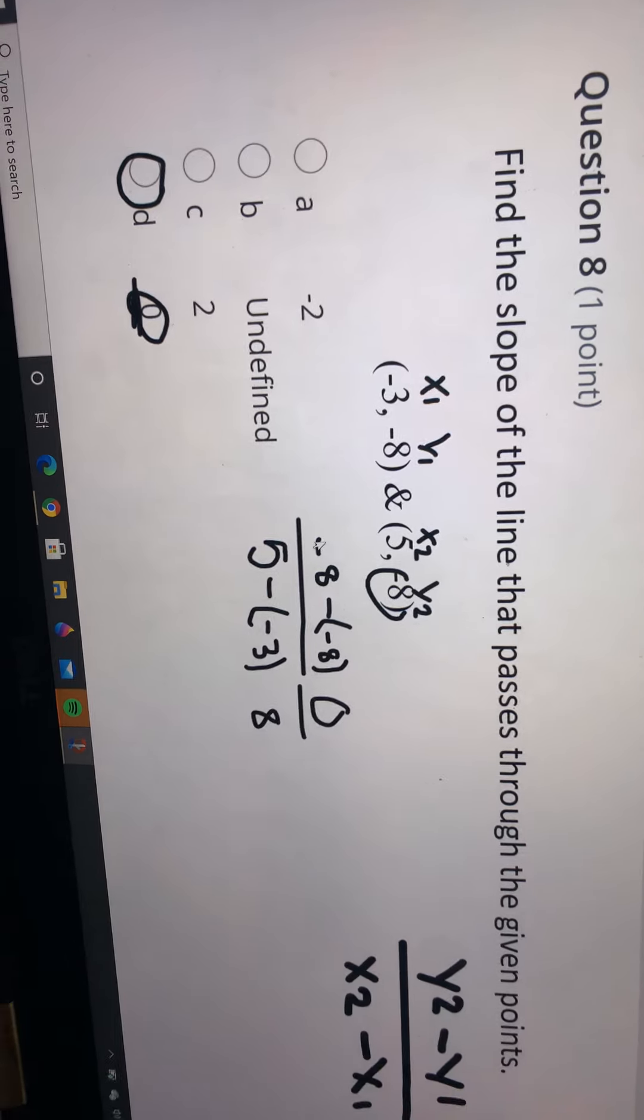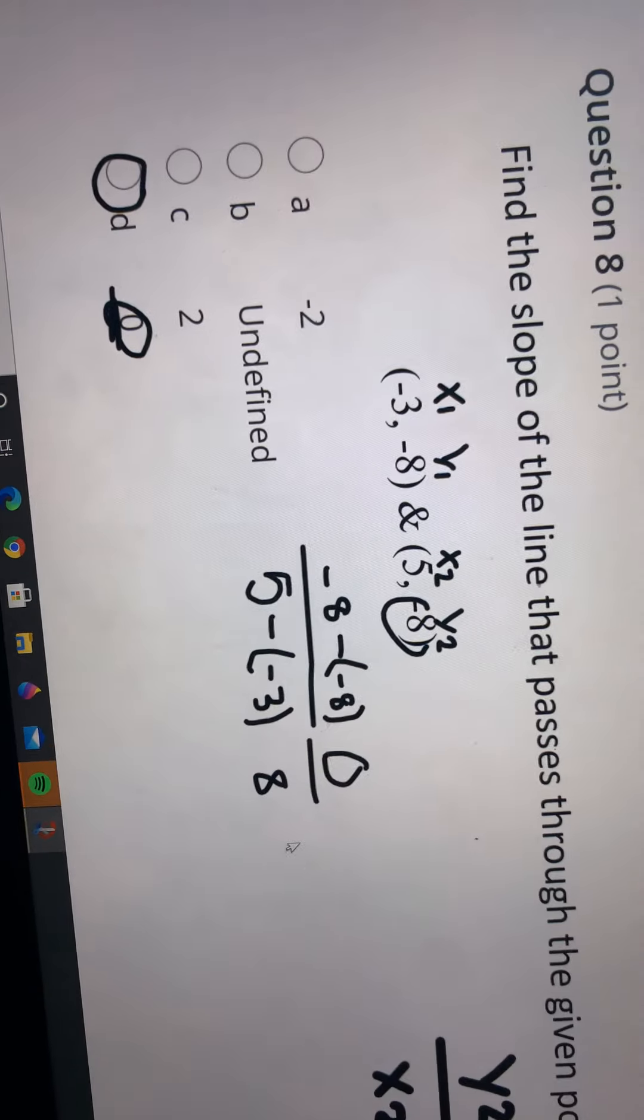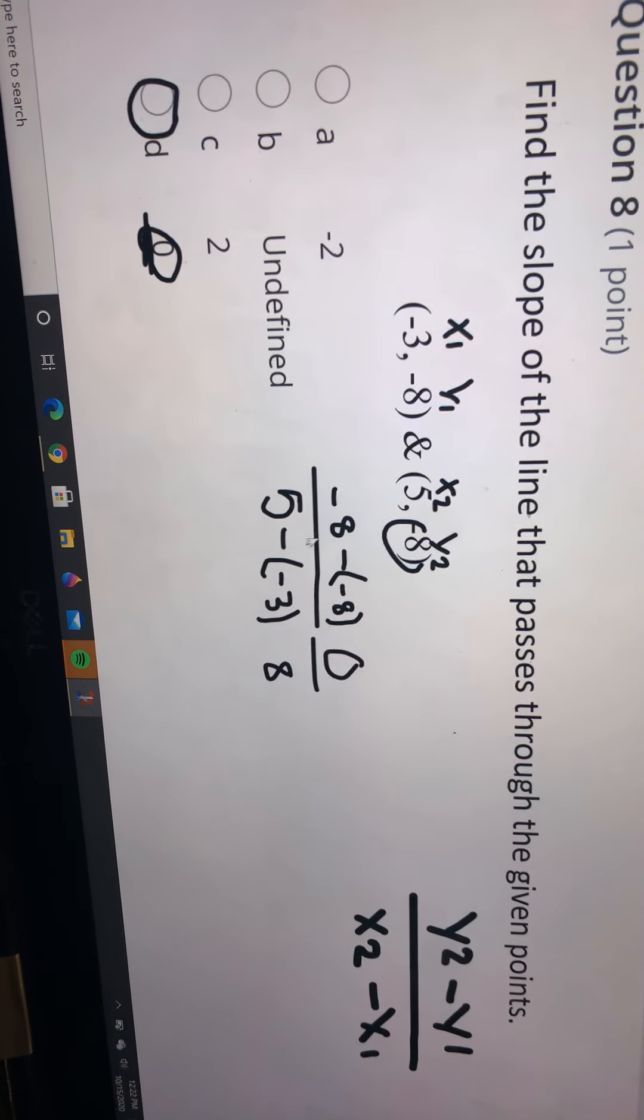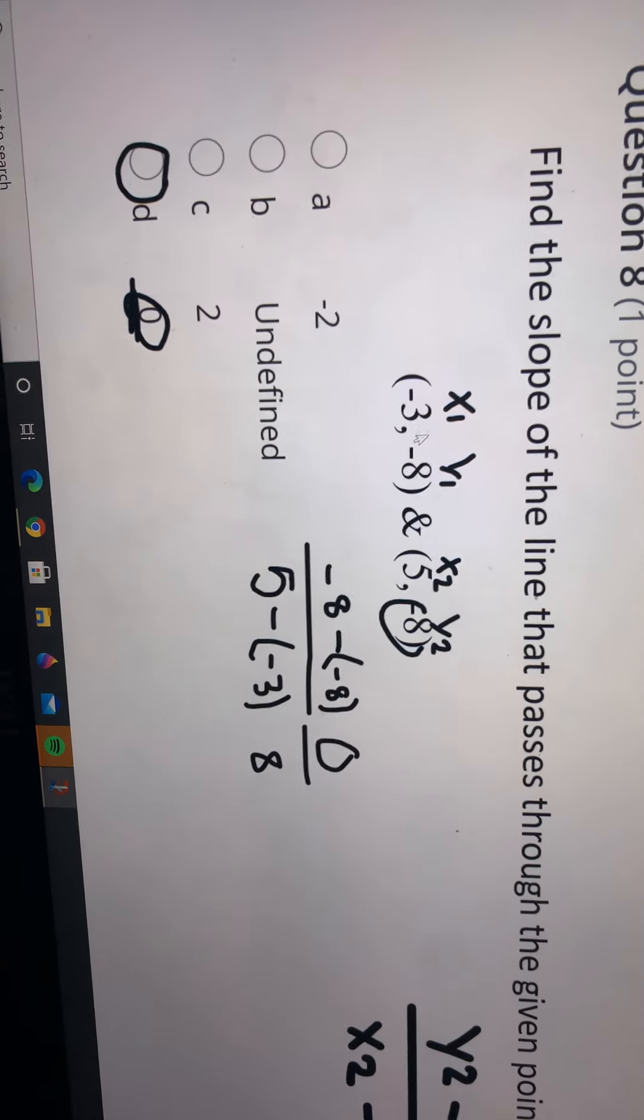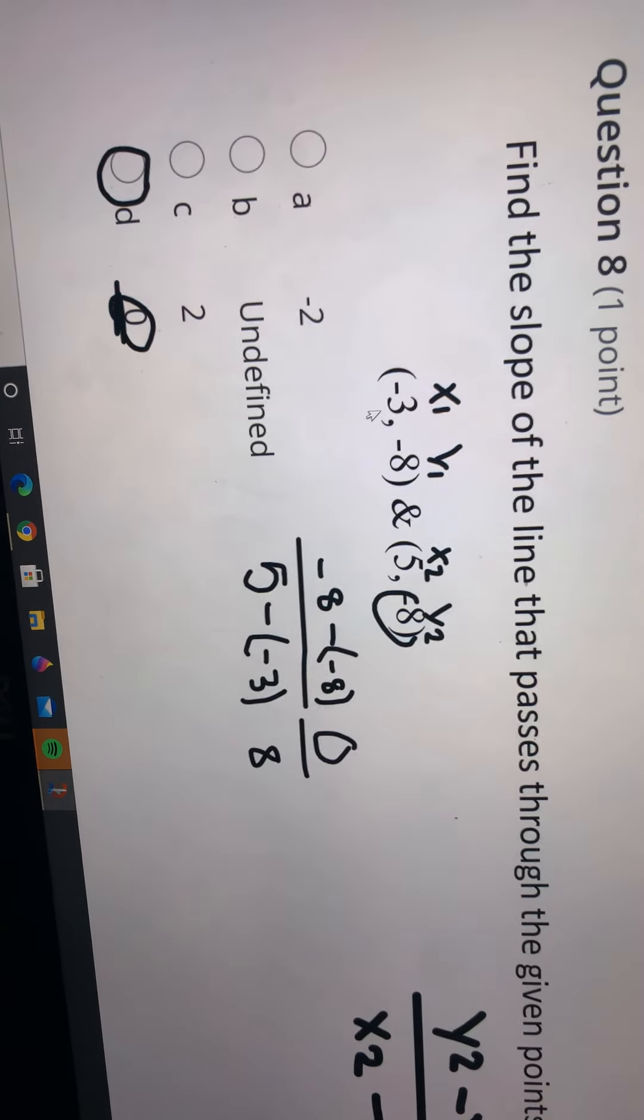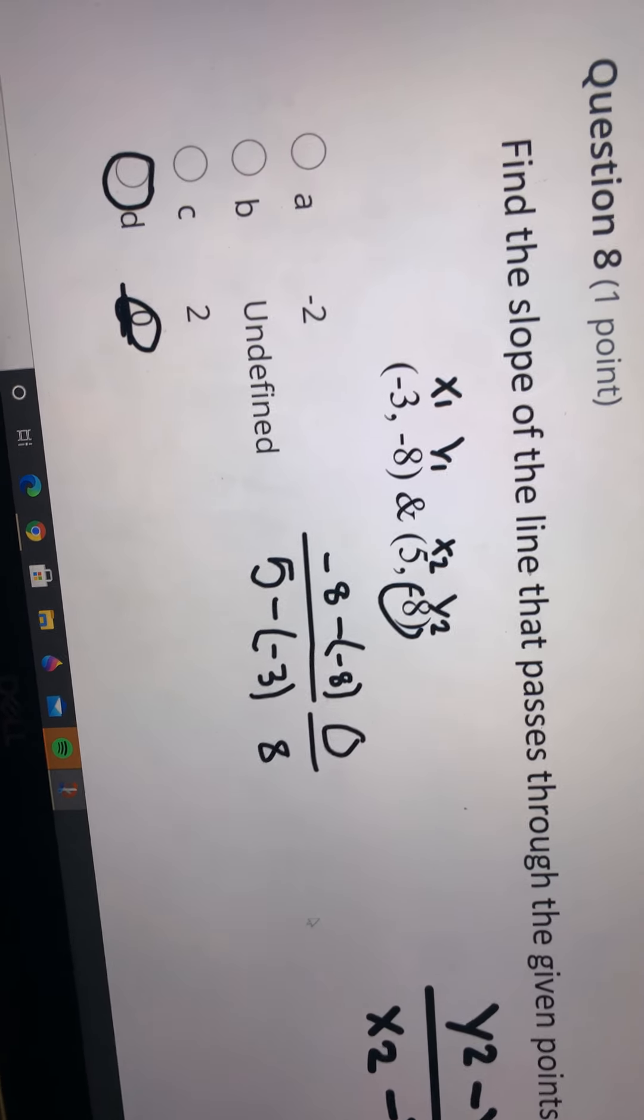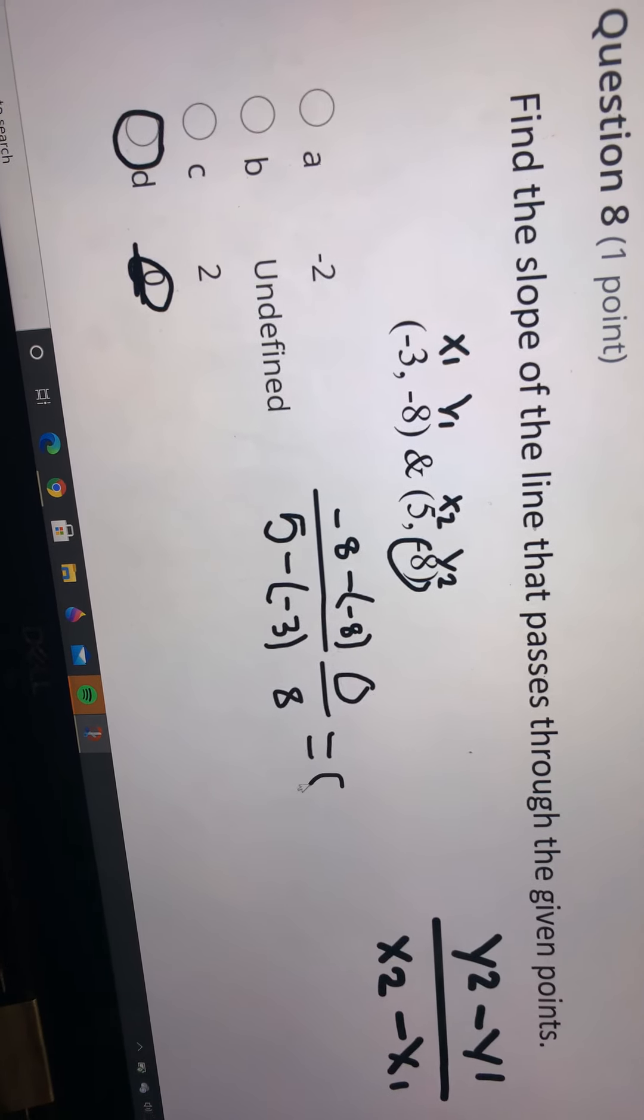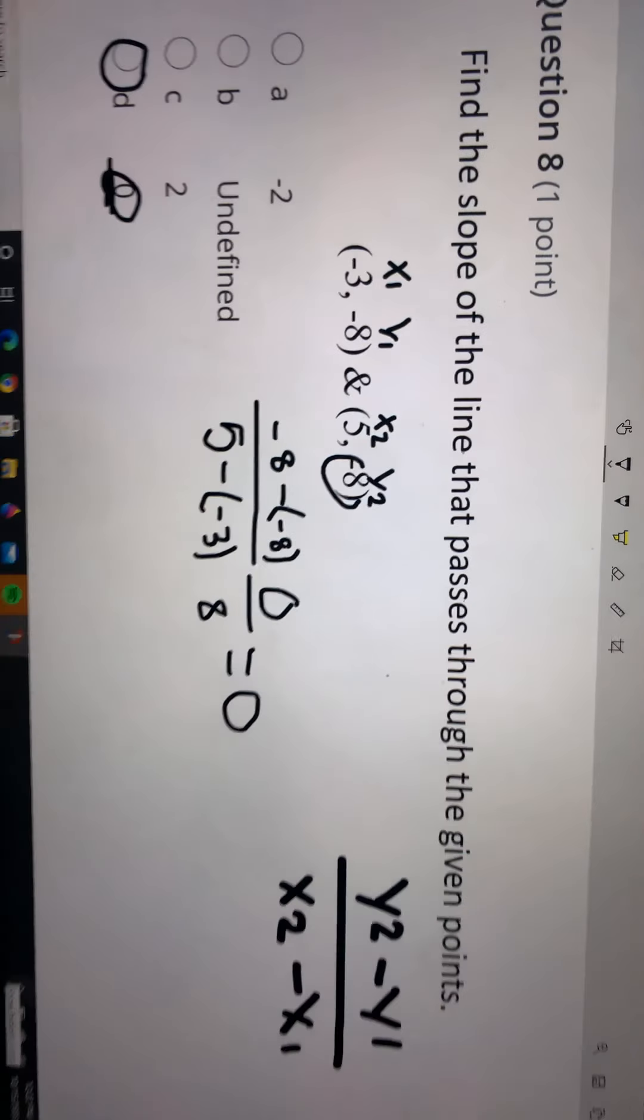When you put it in the calculator, you get that. Then you do x2, so 5 minus x1, which is 5 minus negative 3, equals 8. Then you simplify that and get 0.